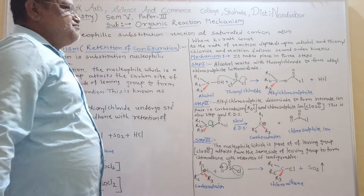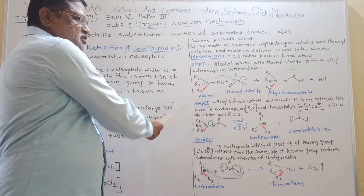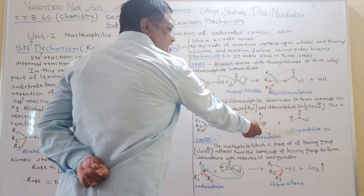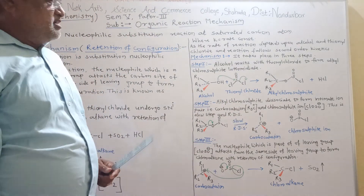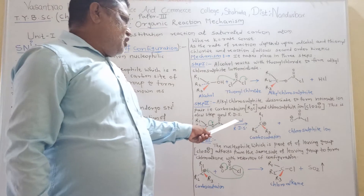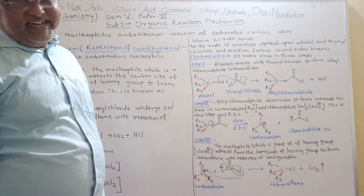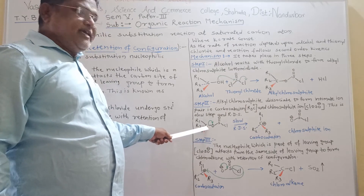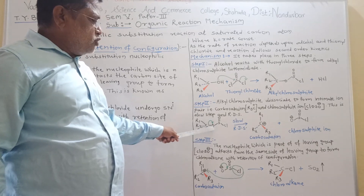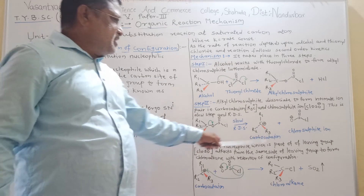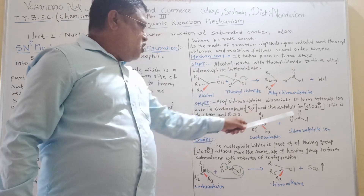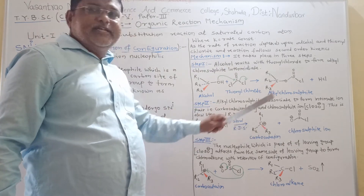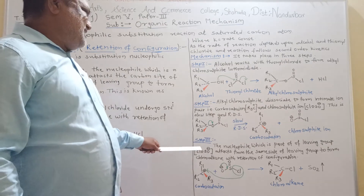In the second step, alkyl chlorosulfite dissociates into two intimate ion pairs: one is the carbocation and the other is the chlorosulfite ion. This is the slow step, called the rate determining step. In this step, oxygen is more electronegative compared to the carbon atom, so oxygen attracts the bond pair of electrons toward itself, becoming electron rich, denoted by a negative charge. On the other hand, the carbon atom loses its electron pair and becomes electron deficient, denoted by a positive charge.